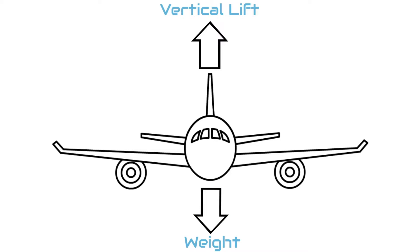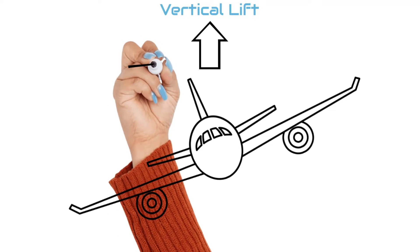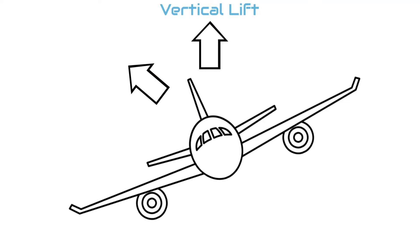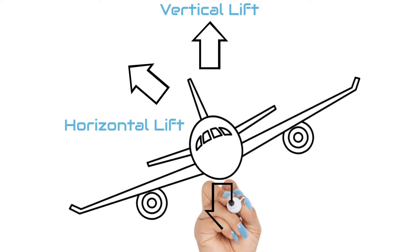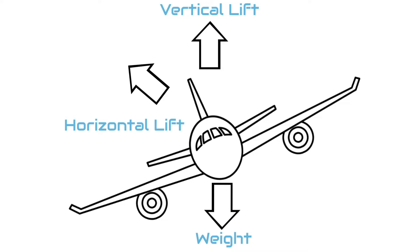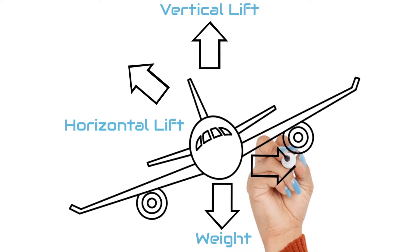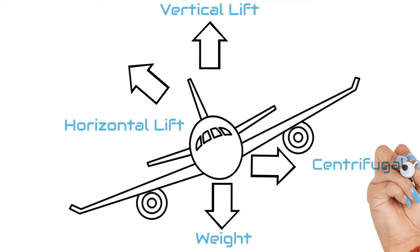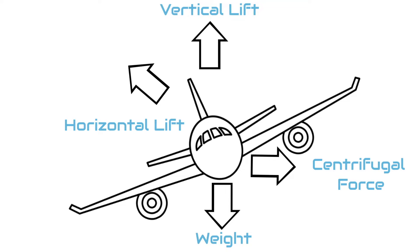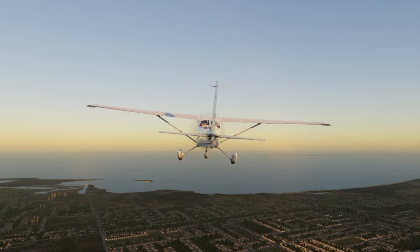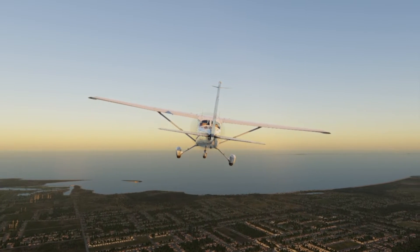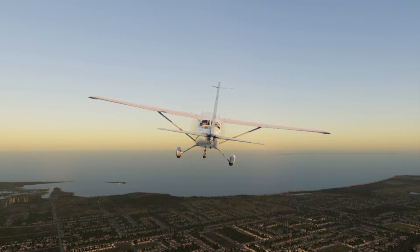When you roll or bank the airplane, some of the lift produced moves laterally — this is called the horizontal component of lift. So now, in this condition, we need enough lift to not only overcome the airplane's weight, but also centrifugal force, which we create when we change the direction of travel from straight and level to being in a turn, because our airplane wants to keep moving straight forward and we are resisting that tendency in order to turn the airplane and change its flight path and attitude.